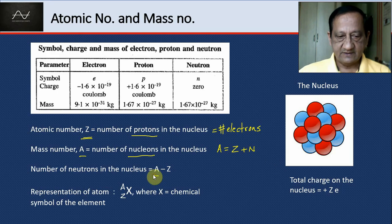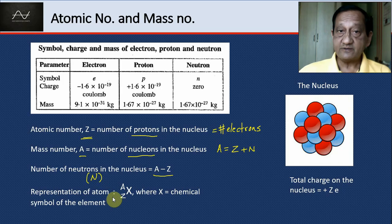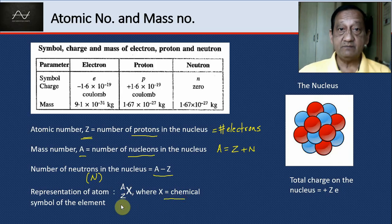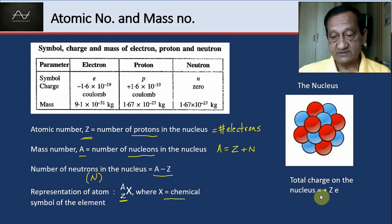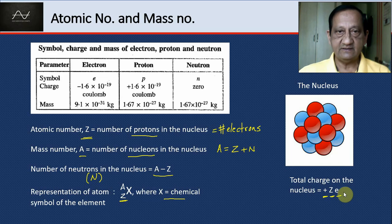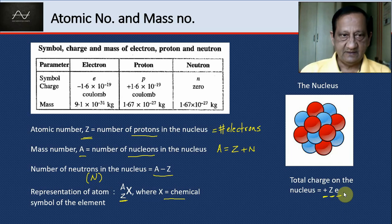The representation of the atom is written as AZX, where X is the chemical symbol based on Z. If you change the Z, that element changes. If there are Z electrons, the total charge on the nucleus is plus Z times E, where E is the charge on a proton, 1.6 into 10 to the power minus 19 Coulomb.